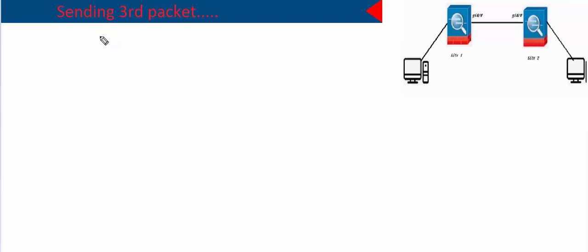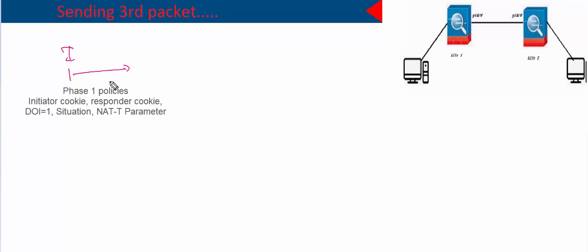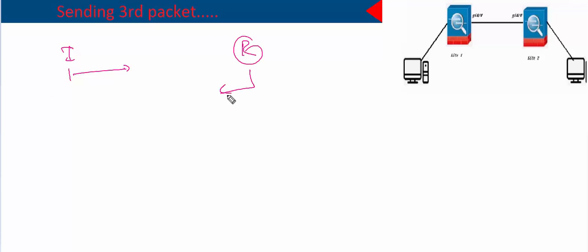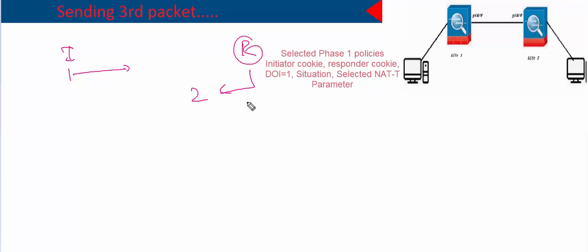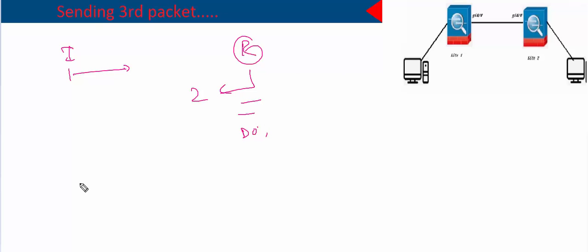Hello and welcome back. Today we're going to see the third packet sending. So far we have seen the first packet and the second packet. The initiator sends the first packet, which includes phase one policies, the initiator cookie, responder cookie field set to zero, domain of interpretation set to one, the situation, and also the NAT-T type it supports. In the second packet, sent from the responder, it sends the selected phase one policies, the selected NAT-T type, domain of interpretation, situation, and the responder cookie.